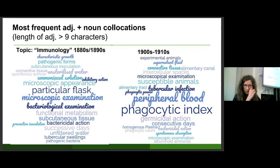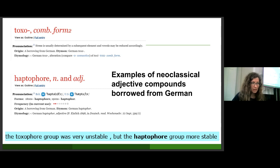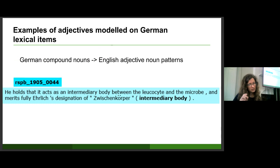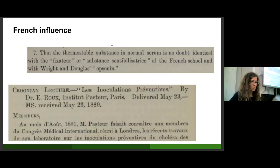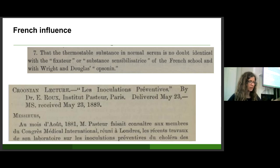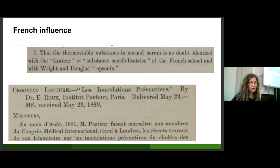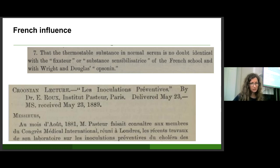Other examples borrowed from German as neoclassical compounds are numerous. It's also interesting that noun compounds can become adjective-noun combinations in translation. There is less influence from French — only one example of a noun followed by adjective integrated into English syntax, 'substance sensibilatrice'. Often French texts were not translated; one Croonian lecture was delivered entirely in French and published in the Transactions entirely in French, by an author from the Institut Pasteur. So these terms do not get translated and integrated into sentences the way German terminology does.